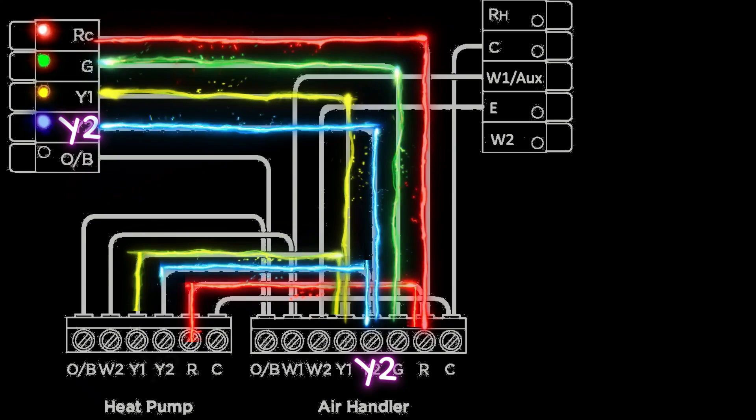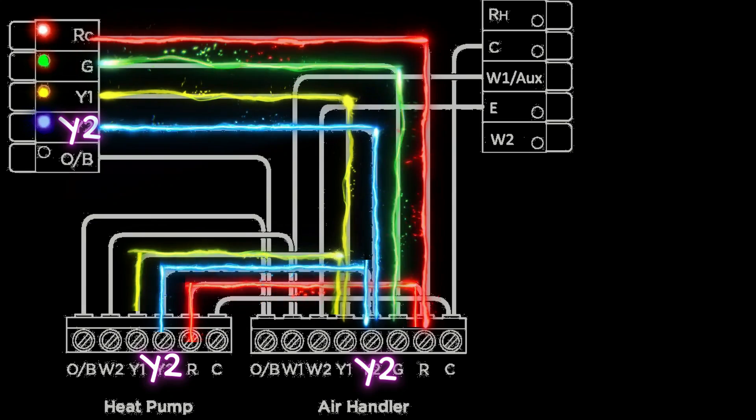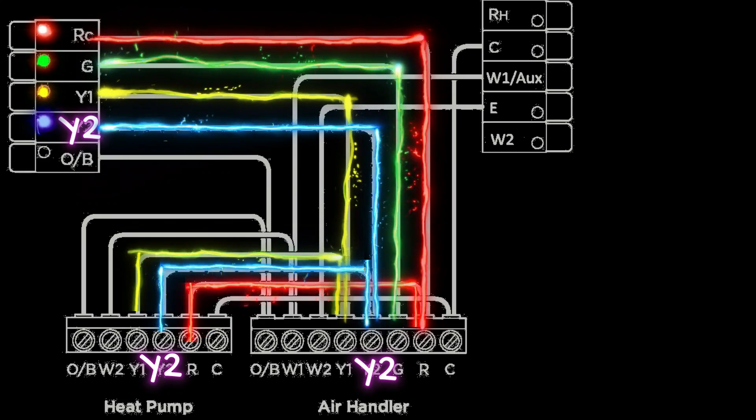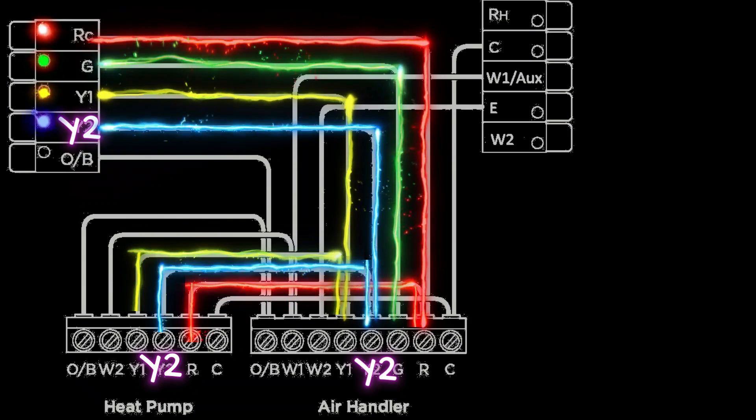You will then have another blue wire coming right off that same Y2 terminal and it'll go out to Y2 on the defrost control board in the condensing unit outside.